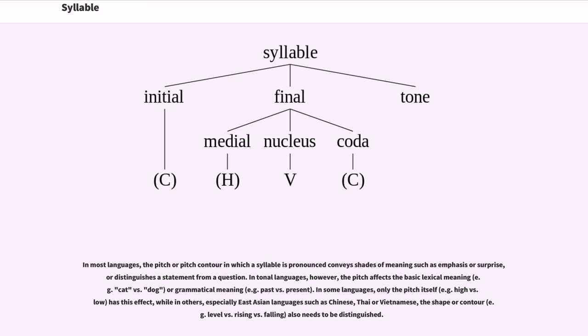In most languages, the pitch or pitch contour in which a syllable is pronounced conveys shades of meaning such as emphasis or surprise, or distinguishes a statement from a question. In tonal languages, however, the pitch affects the basic lexical meaning or grammatical meaning. In some languages, only the pitch itself has this effect, while in others, especially East Asian languages such as Chinese, Thai or Vietnamese, the shape or contour also needs to be distinguished.